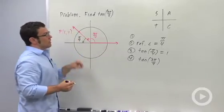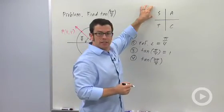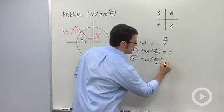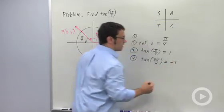We're in the second quadrant right now, where only sine is positive. The others are negative. So tangent's negative here, and that means tangent of 3π over 4 is negative 1.